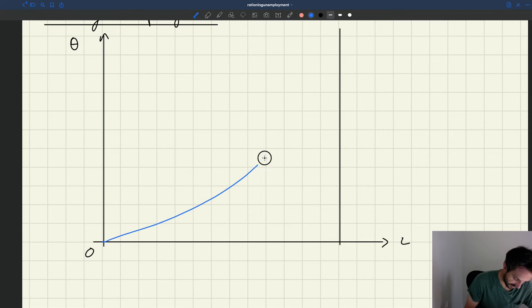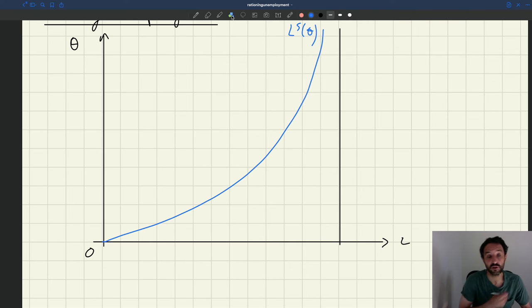Let's put the labor supply as usual. Let's add the labor demand. So let's focus on, if rationing unemployment is zero, so that if the labor demand intersects the X axis above H, should have flagged H.